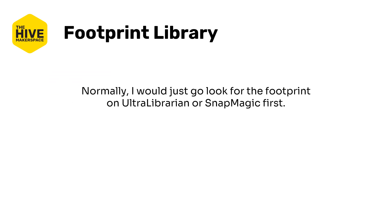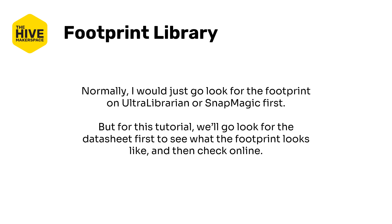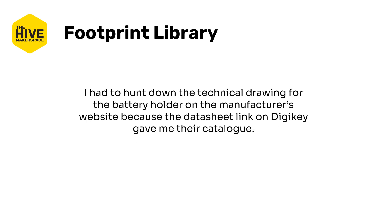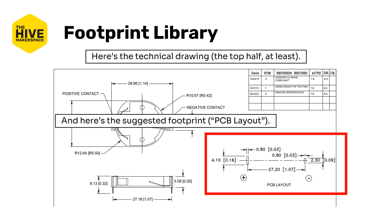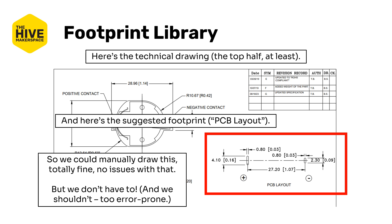Normally, I would just go look for the footprint on UltraLibrarian or SnapMagic first because that's usually the best place to find a footprint. But for this tutorial, we're going to look for the datasheet first and see what the footprint looks like, then check online. I had to hunt down this technical drawing for the battery holder on the manufacturer's website because the datasheet link on DigiKey gave me their catalog, which is not very helpful. This is what the technical drawing looks like — you can see we're given a suggested footprint for the PCB layout on the right, which is really nice. We could totally draw this, but we really don't have to — footprint generation is very error-prone, especially if you're not good at reading technical drawings.